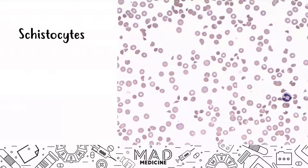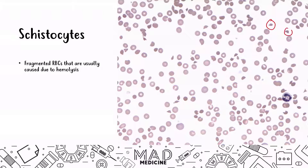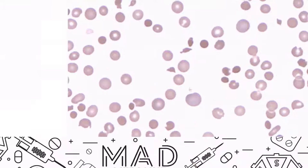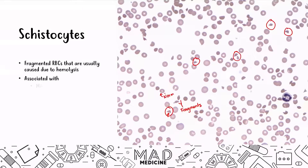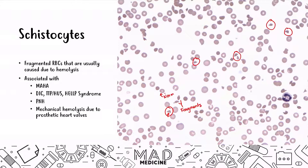Schistocytes are fragmented red blood cells due to hemolysis — these blood cells are being lysed, giving you these little tiny pieces. Don't confuse them with platelets; these are lysed red blood cells. Schistocytes are associated with microangiopathic hemolytic anemias, DIC, TTP, HUS, HELLP syndrome, paroxysmal nocturnal hemoglobinuria, and mechanical hemolysis due to prosthetic heart valves. Any condition that leads to hemolysis, whether mechanical or intrinsic, is going to lead to schistocytes.